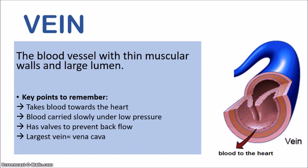Let's move on to look at the vein. The vein is the blood vessel which has thinner muscular walls and a larger lumen, as you can clearly see in the diagram. The key point to remember about the vein is that it carries blood towards the heart. This includes the pulmonary vein on the left-hand side and the vena cava, the largest vein, on the right-hand side of the heart. The blood flowing through the vein is at much lower pressure than in the arteries.